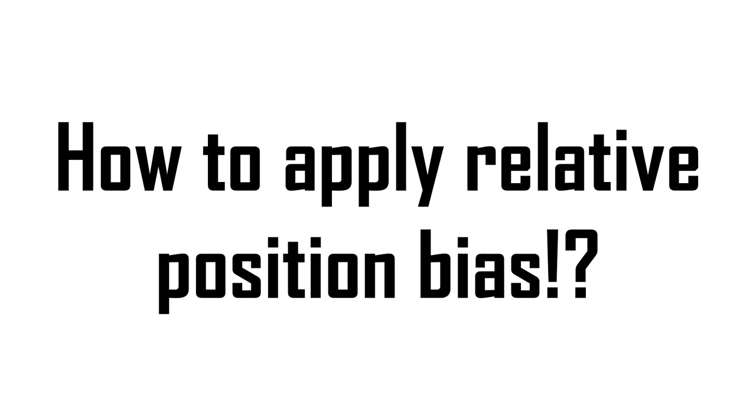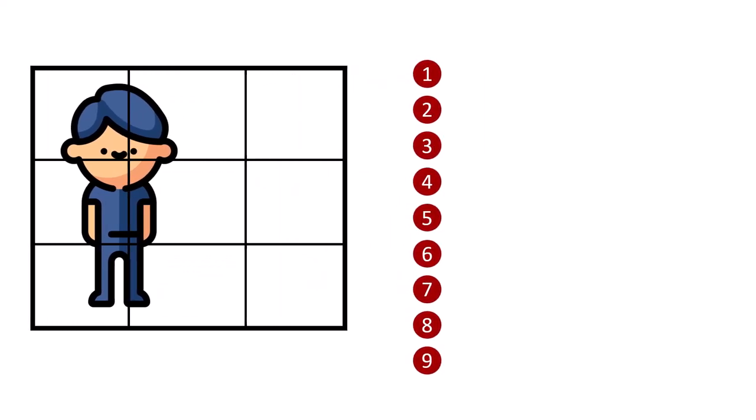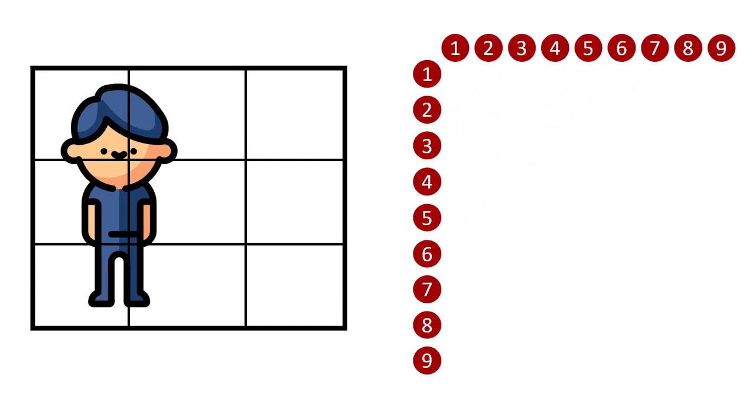So enough of this intuition — let's see how we can apply relative position bias to our self-attention module. You might have questions like: what is the origin after all? Should I even pick one? Well, just hold on, because once I explain this, you'll figure it out. So assuming we have this image and nine patches — which one is our origin? Actually, all of them are our origin. We can have a nine-dimensional vector where for each element, we consider that token as our origin.